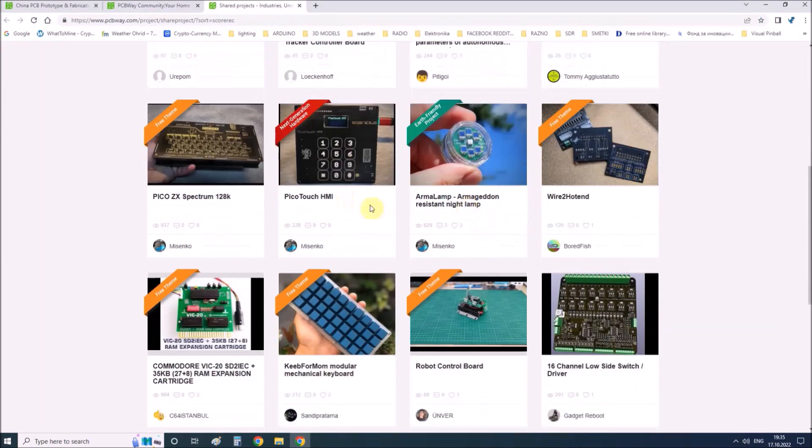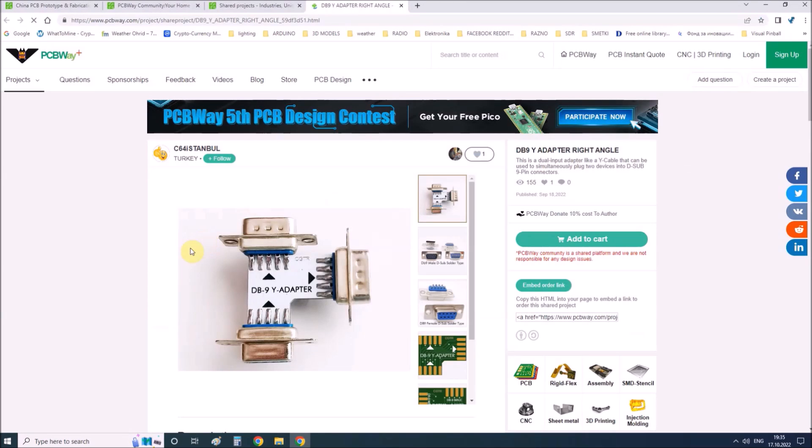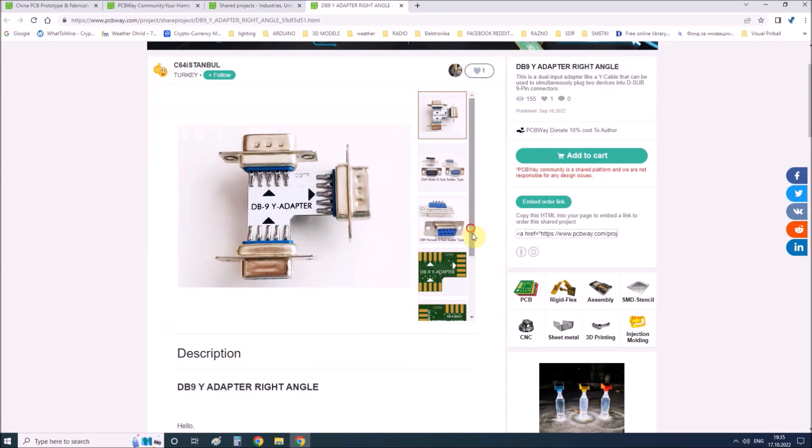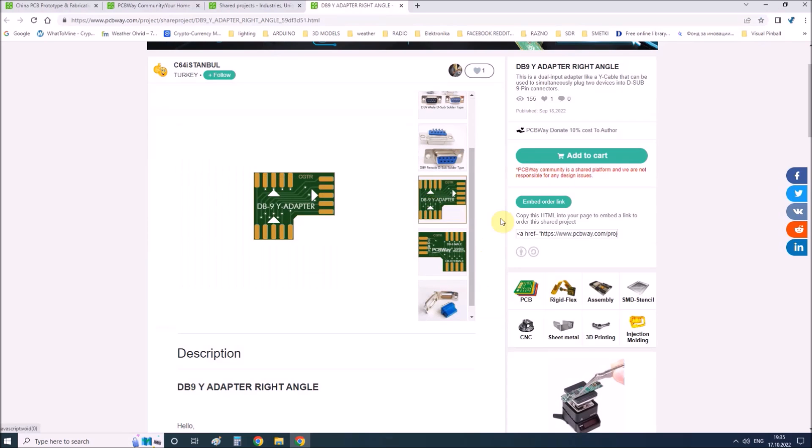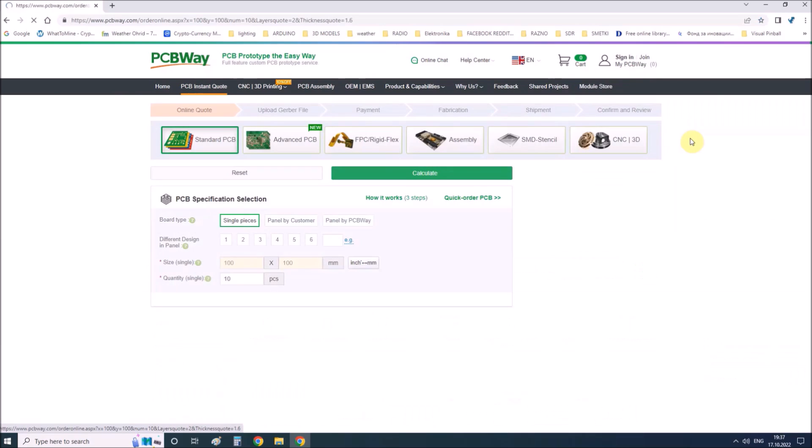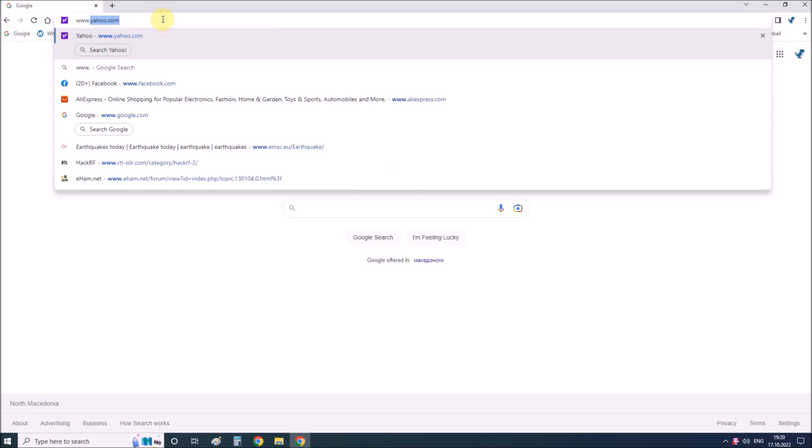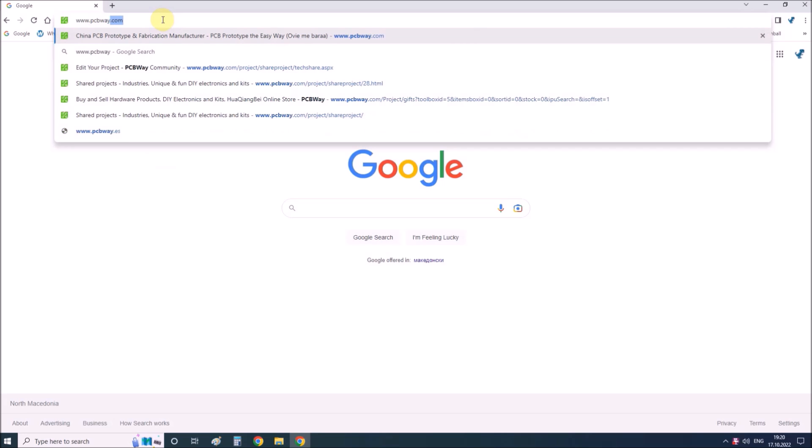From my personal experience I can tell you that on this community you can find many useful projects with already designed PCBs from where you can place an order directly. Also you can get 10 PCBs for only $5. So if you want your PCB just type PCBWay.com on your browser.